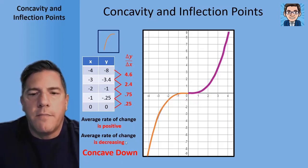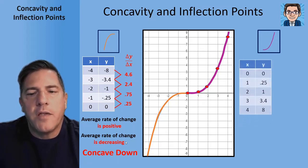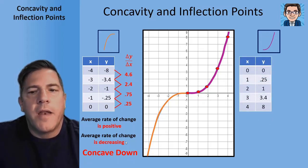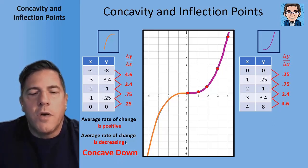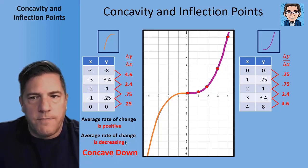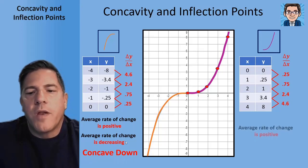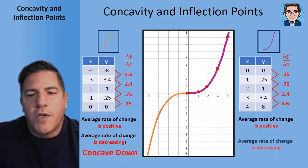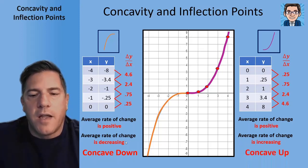Now let's take a look at the right side. We look at a bunch of points and create a table, then take the average rate of change. You'll notice they're still positive — as we go left to right, the function is still increasing, so the average rate of change is positive. However, the average rate of change starts out at 0.25 and goes up to 0.75 and up to 0.4. So the average rate of change is positive and increasing. A point where the average rate of change is increasing and the shape looks like this, we say that is concave up.